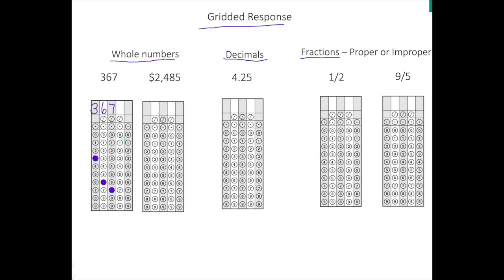Suppose you did another problem on the test and your answer turned out to be $2,485. Now one thing you have to know about the grid is that you cannot input symbols. So you cannot input the dollar sign. That cannot be inputted in the grid. Also, if your answer turns out to be negative, that cannot be inputted into the grid. So you know right away your answer is incorrect. Also, notice this comma right here. This cannot be inputted in the grid either. So you cannot put that comma.